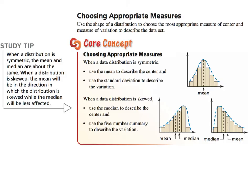Now, choosing appropriate measures: use the shape of a distribution to choose the most appropriate measure of center and measure of variation to describe the data set. When it's symmetric, you're going to use the mean to describe the center and standard deviation to describe the variation. When the data is skewed — either to the left or to the right — you're going to use the median to describe the center and the five-number summary to describe the variation.